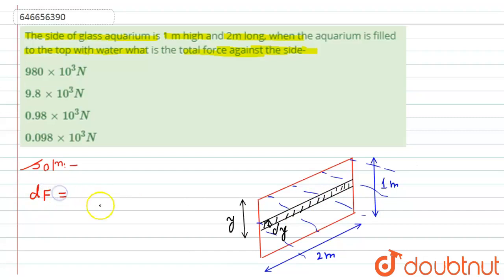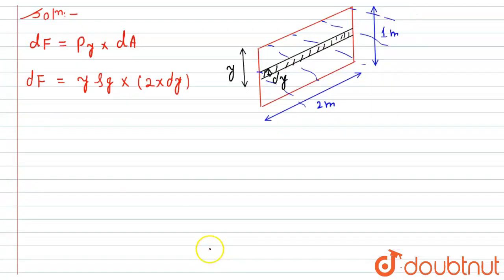The small force dF will be equal to the pressure P into the small area dA. So this will be the pressure on this small portion, which will be y times rho g into area, which will be 2 into dy. This will be equal to dF.